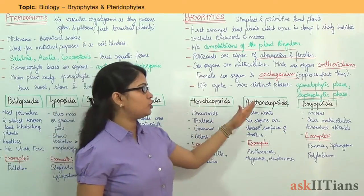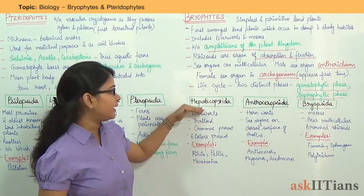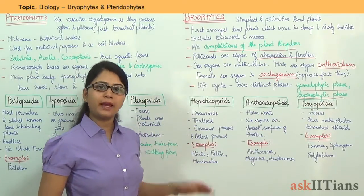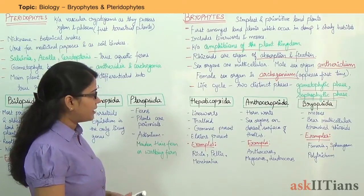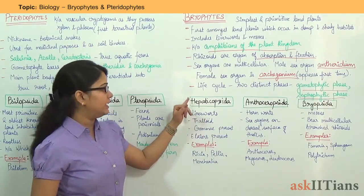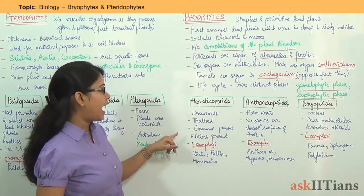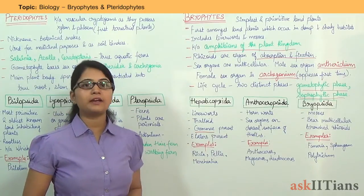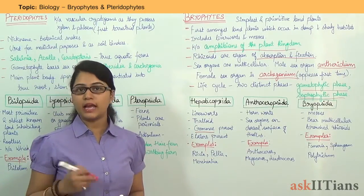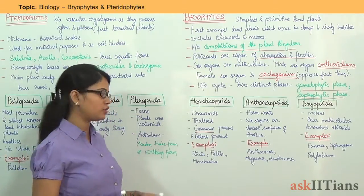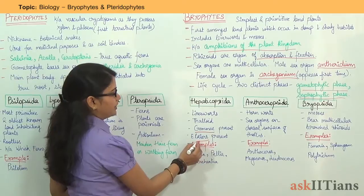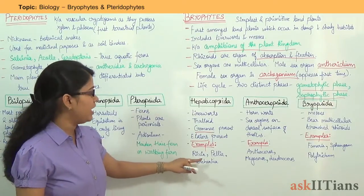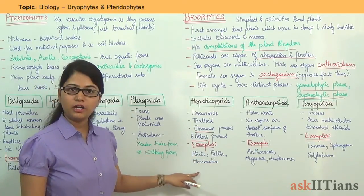Bryophytes are classified into three groups: Hepaticopsida, Anthocerotopsida, and Bryopsida. Hepaticopsida are the liverworts. These plants have thalloid structure and gemma cups are present. Gemma are the organs responsible for asexual reproduction. Elaters are also present in the case of Hepaticopsida. Examples under Hepaticopsida are Riccia, Pellia, and Marchantia.